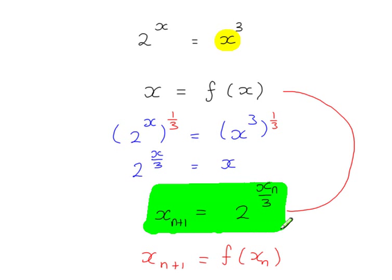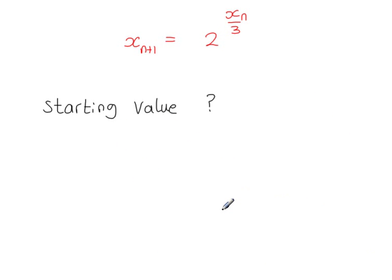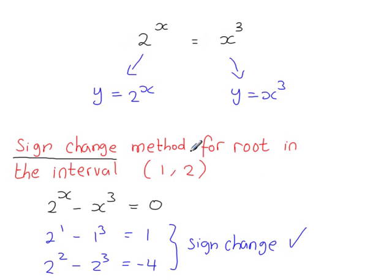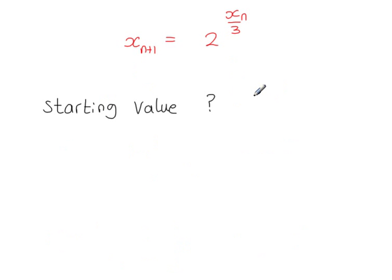It's possible that when I use this formula the method completely fails and I find no solution. This is possible because these are numerical methods — you're never quite sure which one is going to work. If one doesn't work, you try another one, a different approach. To use an iteration formula you need a suitable starting value. We know there was a sign change between x = 1 and x = 2, so any value in that range would be suitable. I'm going to use x = 1.